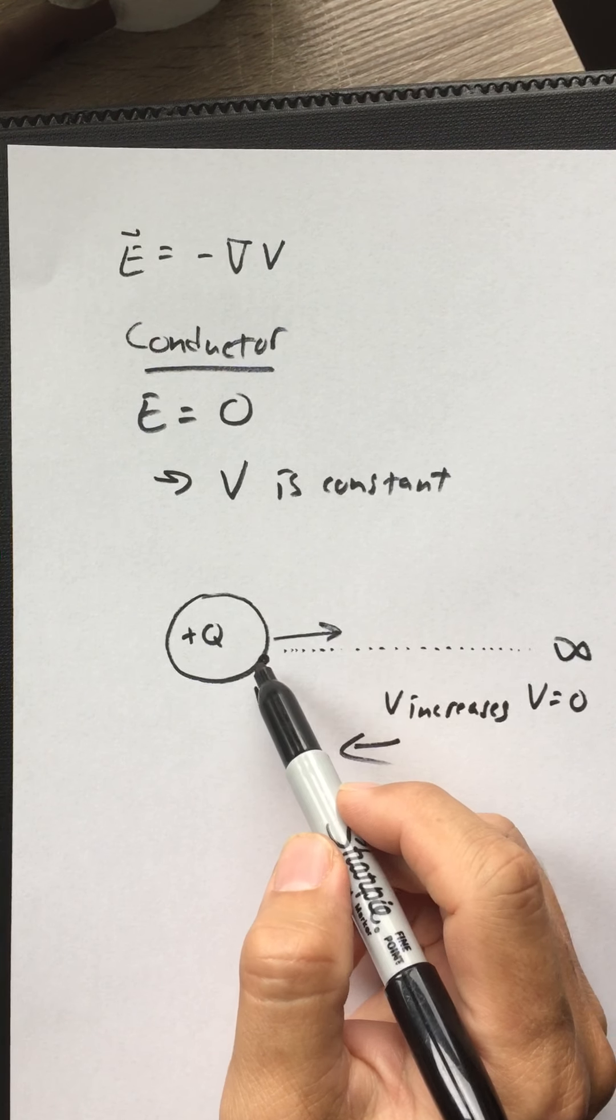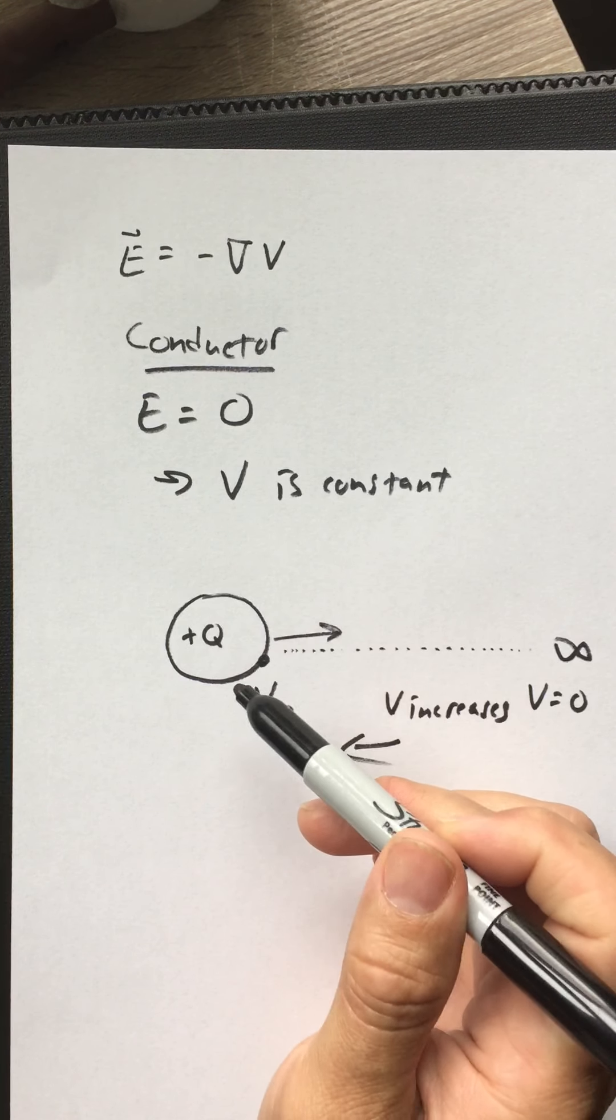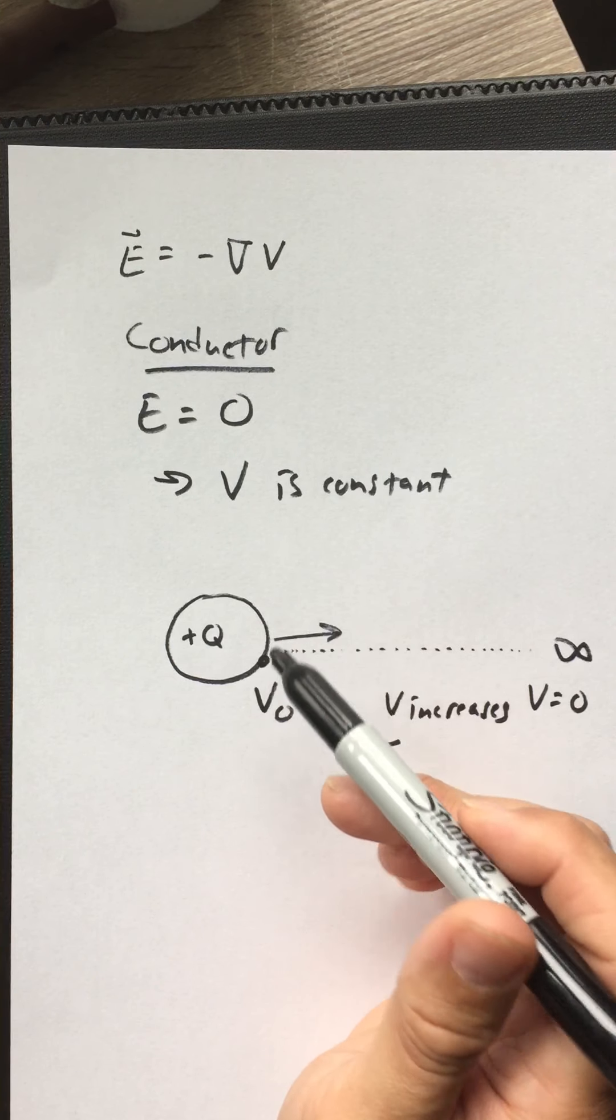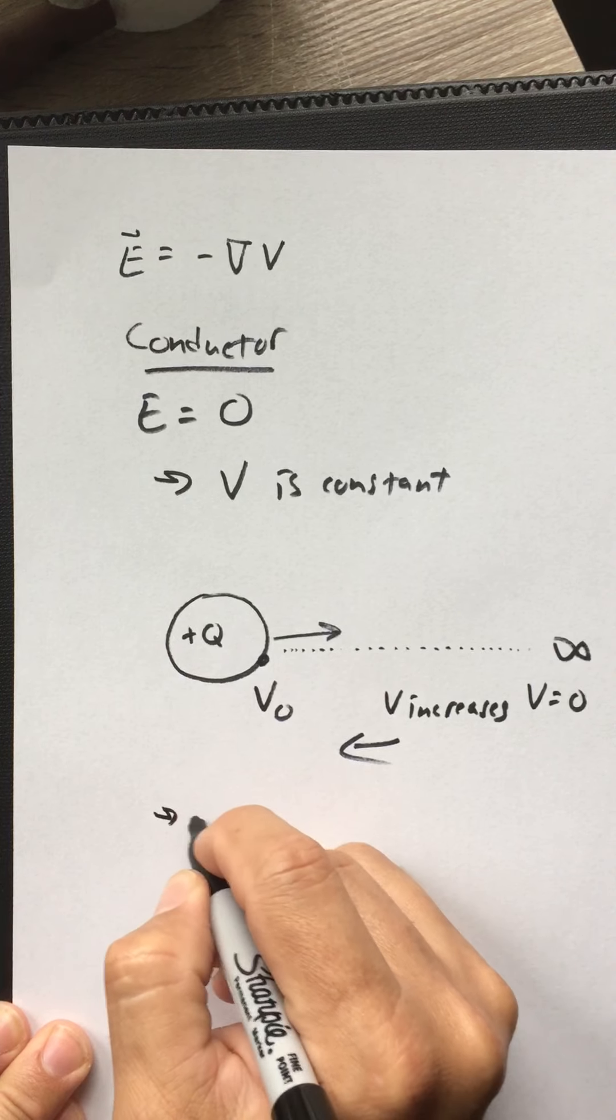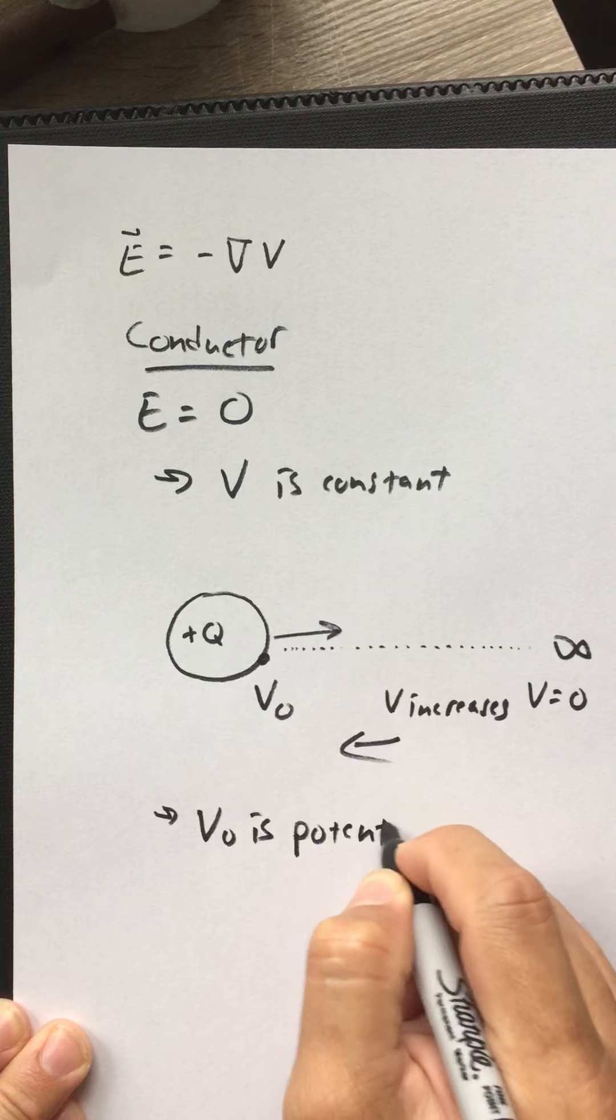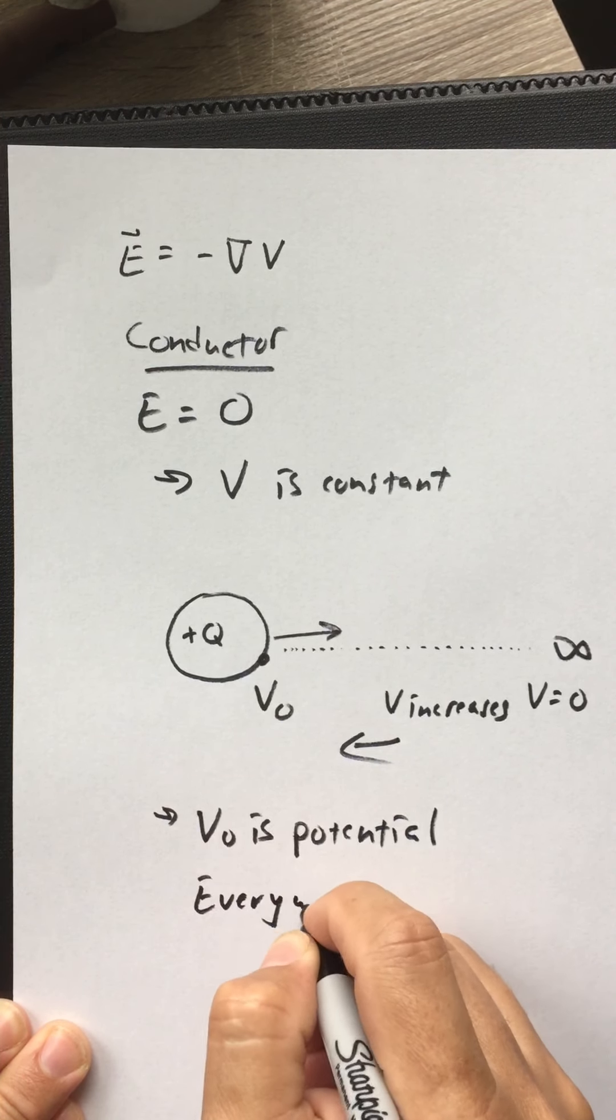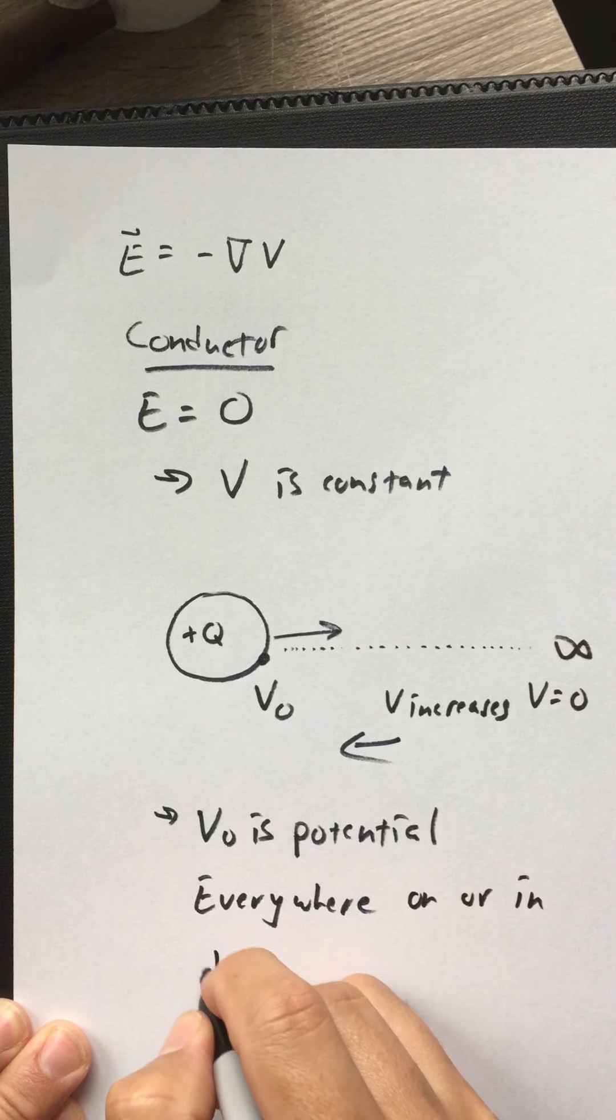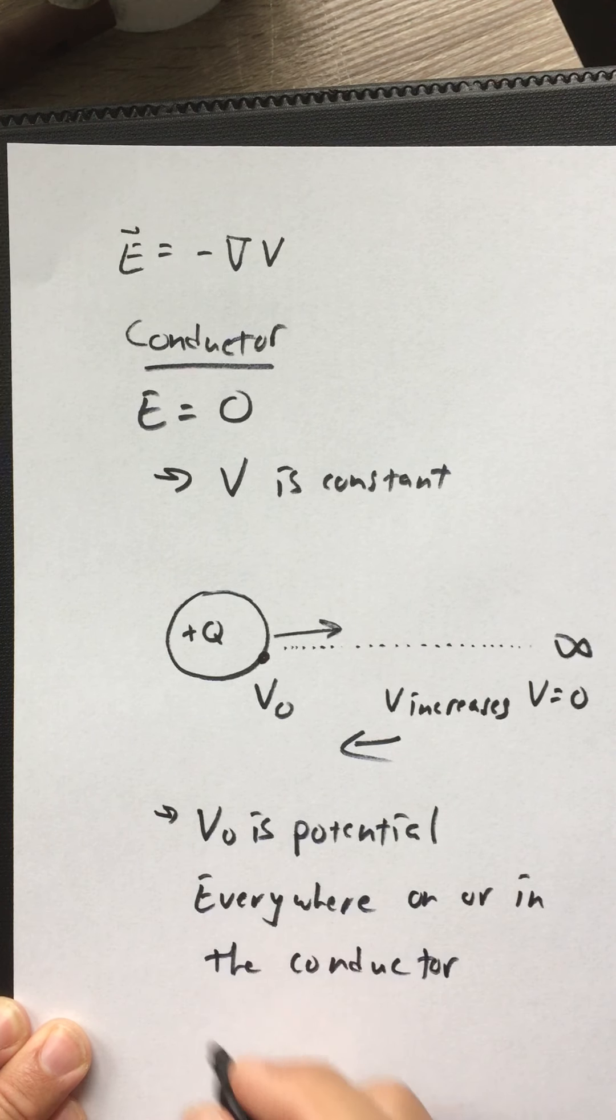What this is saying now is that everywhere on this conductor has to be the same potential. Everywhere inside this conductor has to be at the same potential. And whatever V naught I find on the surface of that conductor, V naught is now the potential everywhere on or in the conductor.